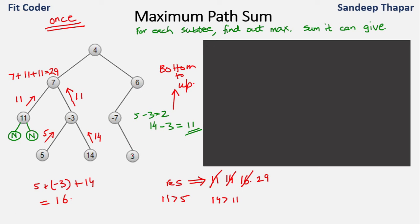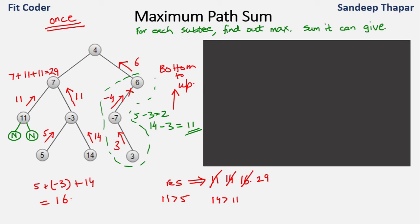At leaf node 3, the sum is 3. At node minus-7, the left is 0 and the right is 3, so the maximum sum it can provide is −7 + 3 = −4. At node 6, the right is 0 and the left subtree provides a sum of −4. Since including −4 would decrease the sum, we can skip this entire subtree. The maximum sum node 6 can contribute is therefore just 6.